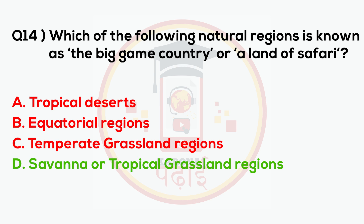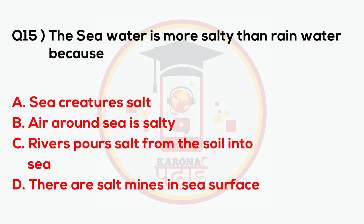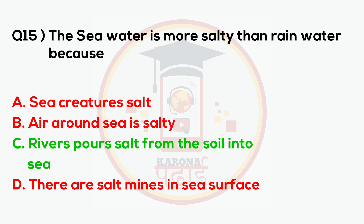Answer: Savannah or tropical grassland regions. The sea water is more salty than river water because rivers pour soil from the land into the sea.